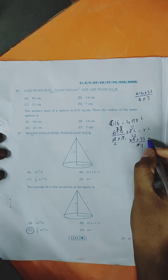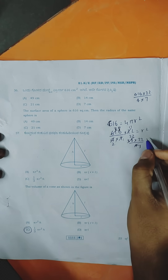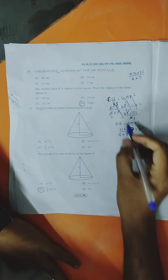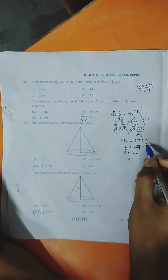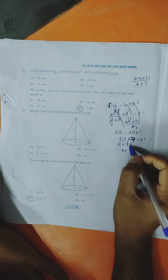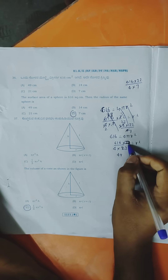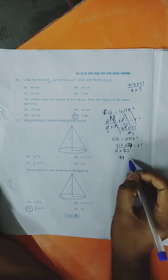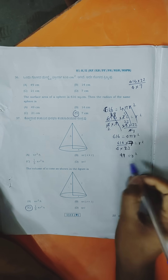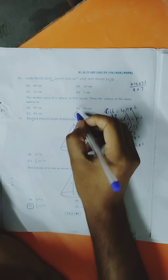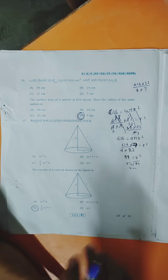Next question: 616 = 4πr². Substituting π = 22/7: 616 = 4 × (22/7) × r². Simplifying: r² = 616 × 7 / (4 × 22) = 49, so r = √49 = 7. Seven is the right answer.